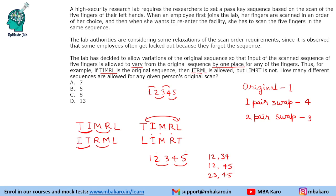So the total cases are: 1 original, plus 4 cases swapping one adjacent pair, plus 3 cases swapping two adjacent pairs, for a total of 8 allowed sequences to log in.